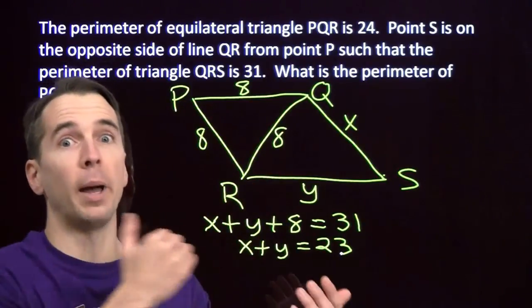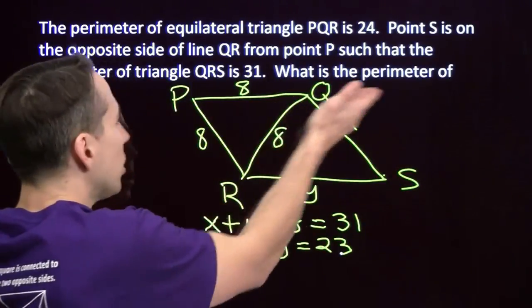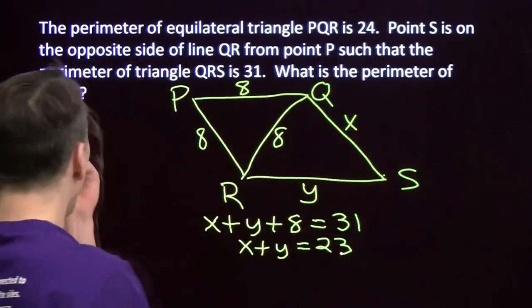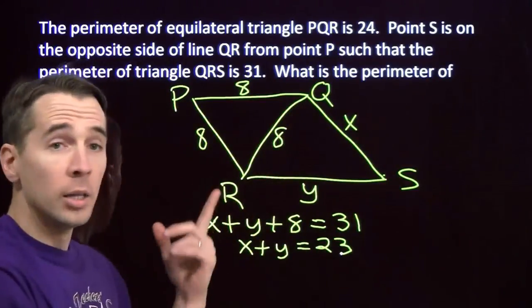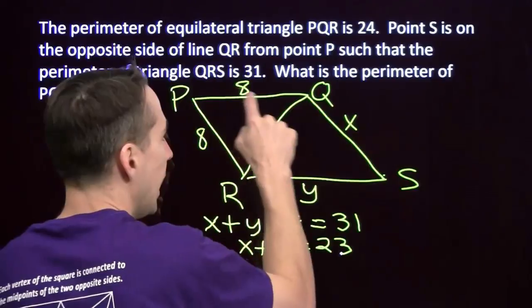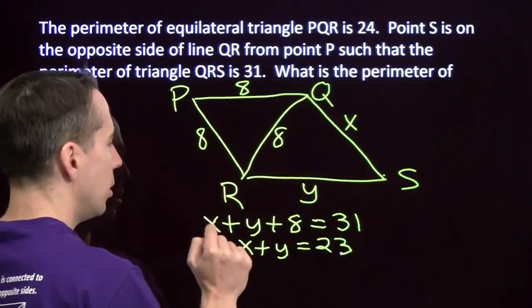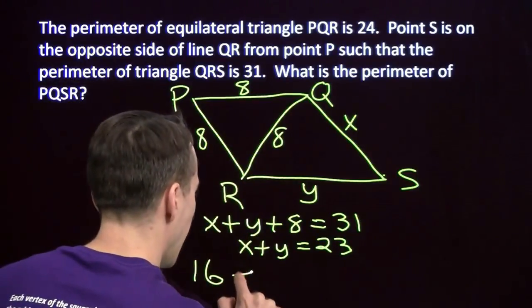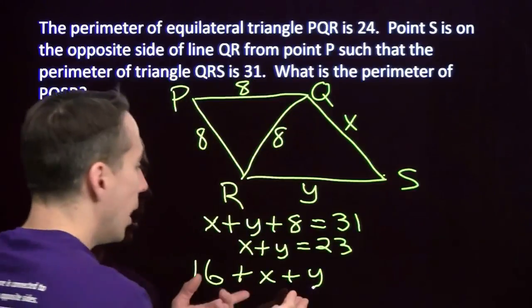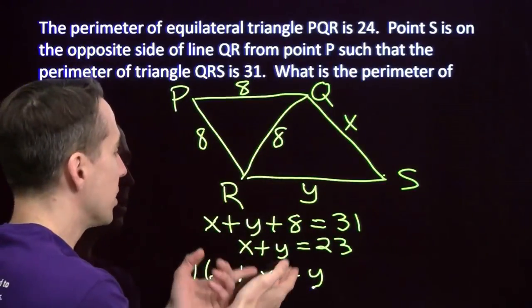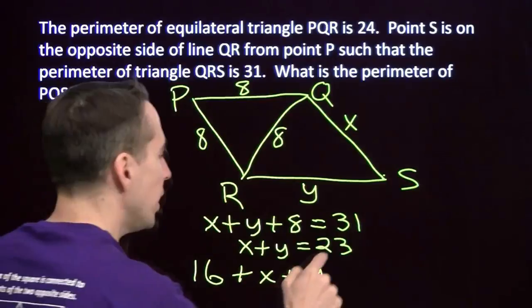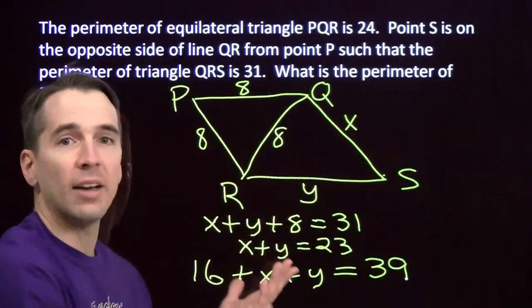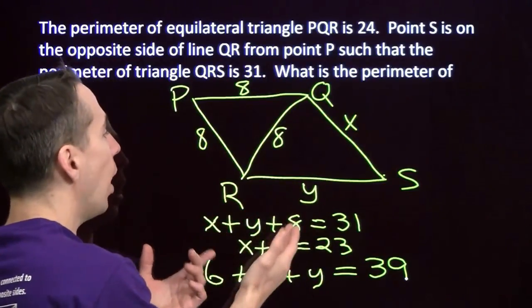Let's focus on what we're trying to find. One of the things I like to do in geometry problems is go backwards. When I'm stuck, I look at what I'm looking for and see if I can go backwards from there to get the answer. What I'm looking for here is what is the perimeter of P, Q, S, R? The perimeter of P, Q, S, R is 8 plus X plus Y plus 8. So that perimeter is 16, the two eights, plus X plus Y. And I know what X plus Y is. X plus Y is 23. Add 23 to 16 and we get 39. We didn't even have to figure out what X and Y are.